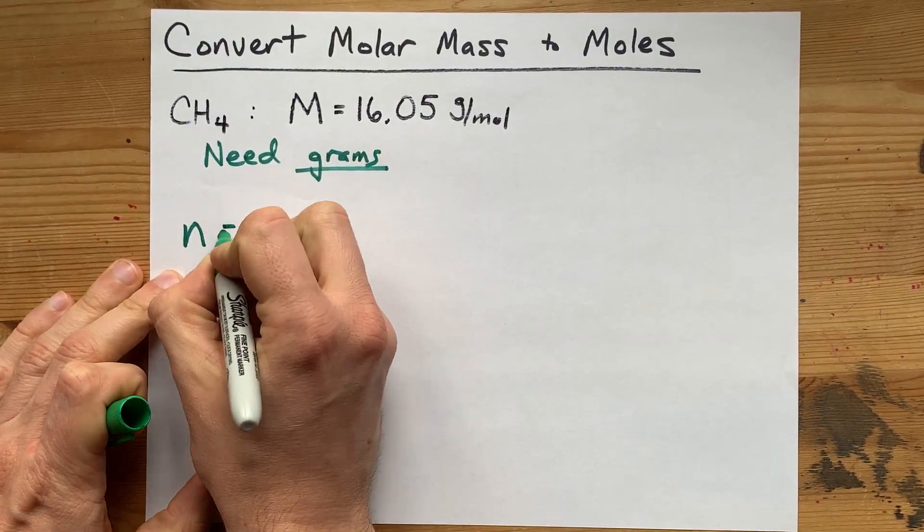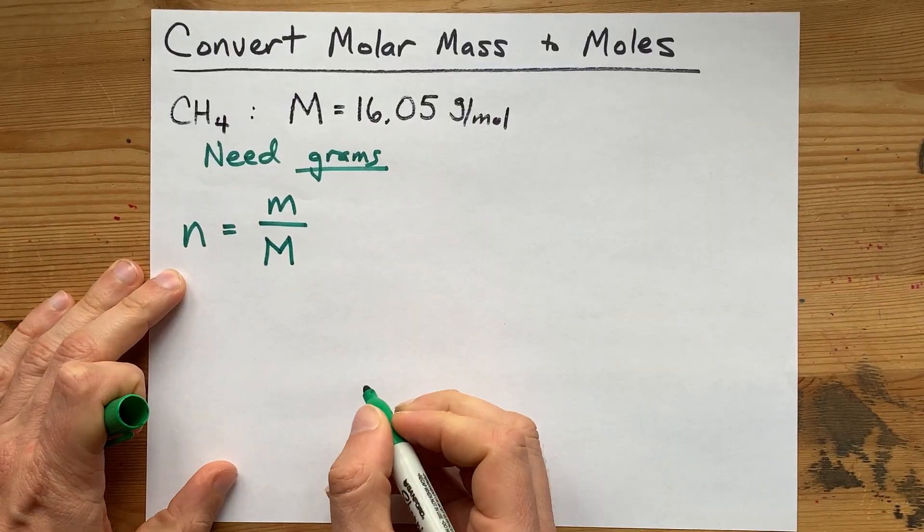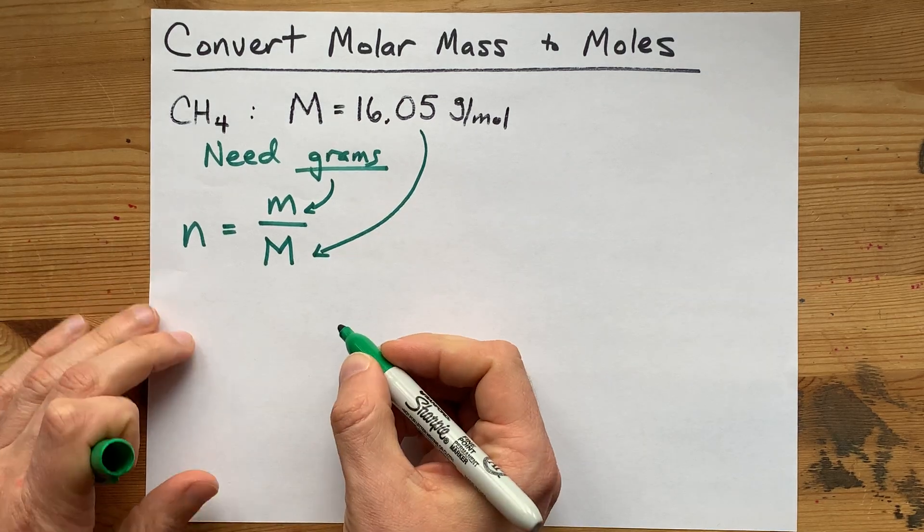The number of moles is the mass divided by the molar mass, but you need a number of grams to divide the molar mass by.